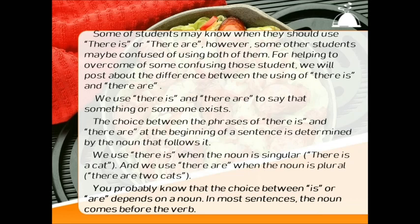We use 'there is' when the noun is singular. Example: there is a cat. And we use 'there are' when the noun is plural. Example: there are two cats. You probably know that the choice between IS or ARE depends on the noun.